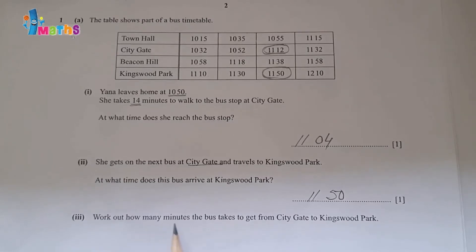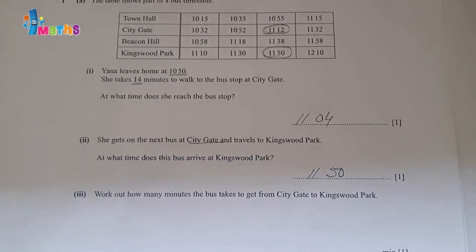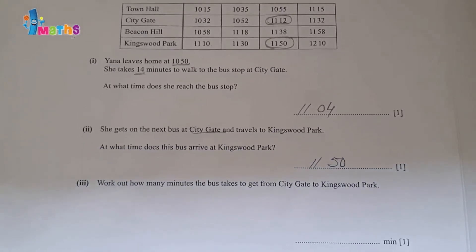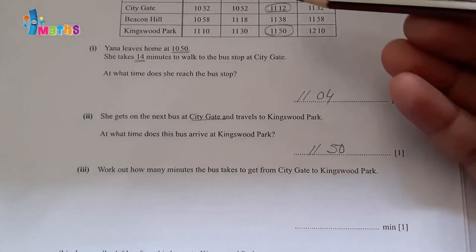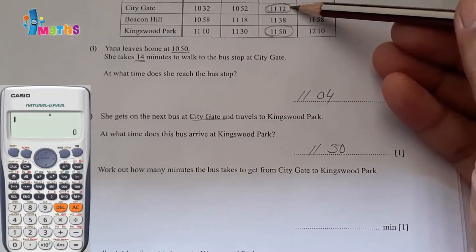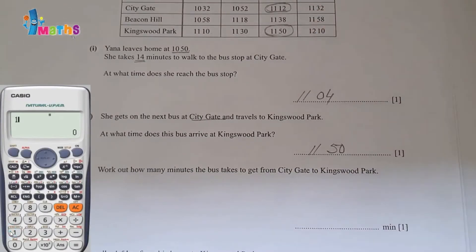Part 3: Work out how many minutes the bus takes to get from City Gate to Kingswood Park. So it will be starting at 11:12 and it will reach at 11:50. Again, we can use the calculator.